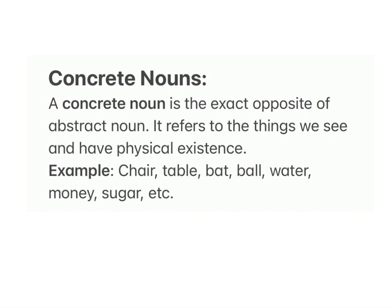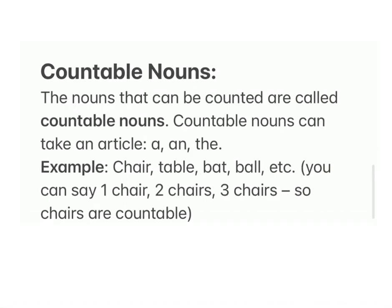Concrete nouns refer to things we see and that have physical existence. Examples: chair, table, bat, ball. Countable nouns: the nouns that can be counted are called countable nouns. Countable nouns can take an article 'a' and 'the'. Examples: chair, table, bat, ball. You can say one chair, two chairs, three chairs.